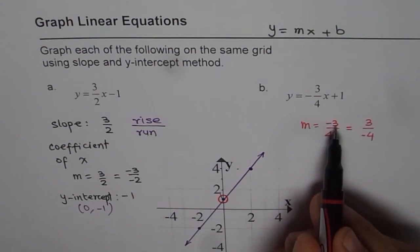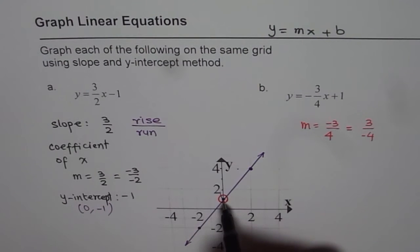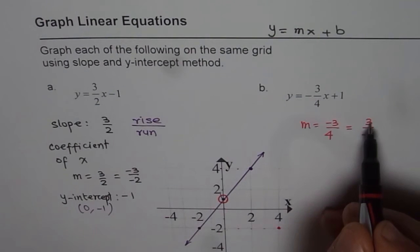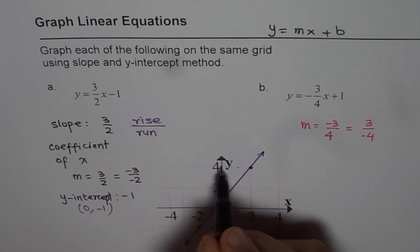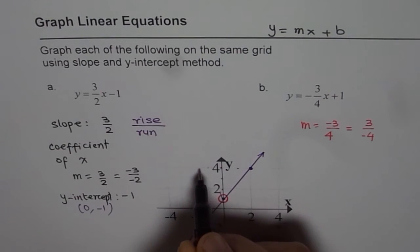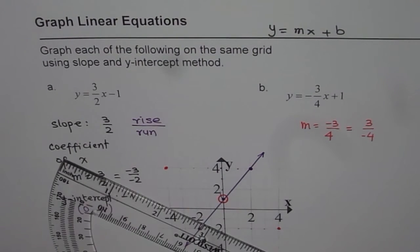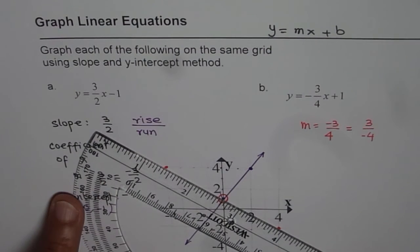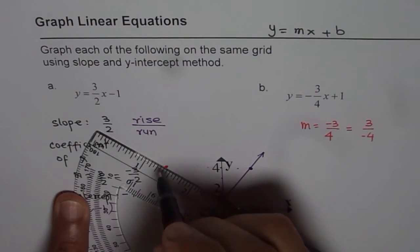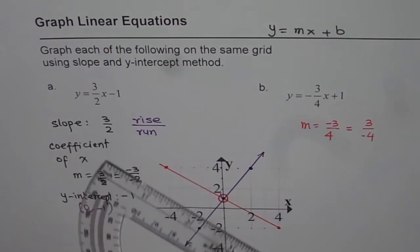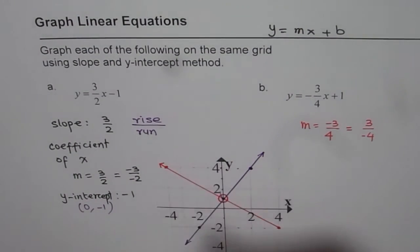If I use minus 3 over 4, that means go down, rise of minus 3. From here, 1, 2, 3, down 3. And 4 to the right. 1, 2, 3, 4. And if I use the slope of 3 over minus 4, go to the y-intercept and then up 3. 1, 2, 3. And 4 to the left. 1, 2, 3, 4. Joining these three points, the y-intercept of 1 with the two points which we found with the help of slope, gives us the graph for the given linear equation. That is the graph of part B.